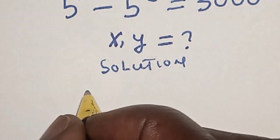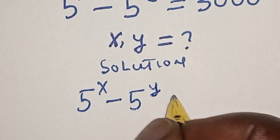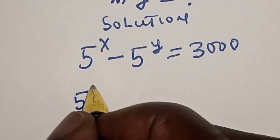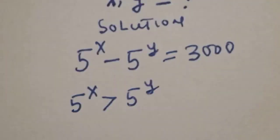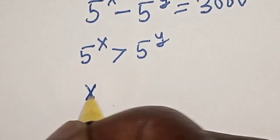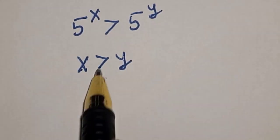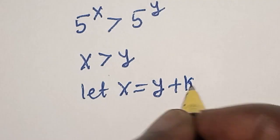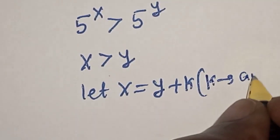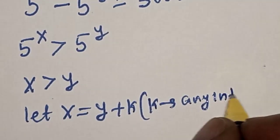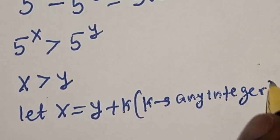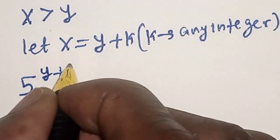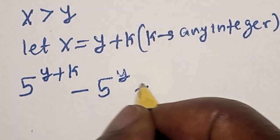We have the given question: 5 raised to power x minus 5 raised to power y is equal to 3000. Take note that 5 raised to power x is greater than 5 raised to power y, therefore x is greater than y. Since x and y are positive integers, let x equal y plus k, where k is any positive integer.